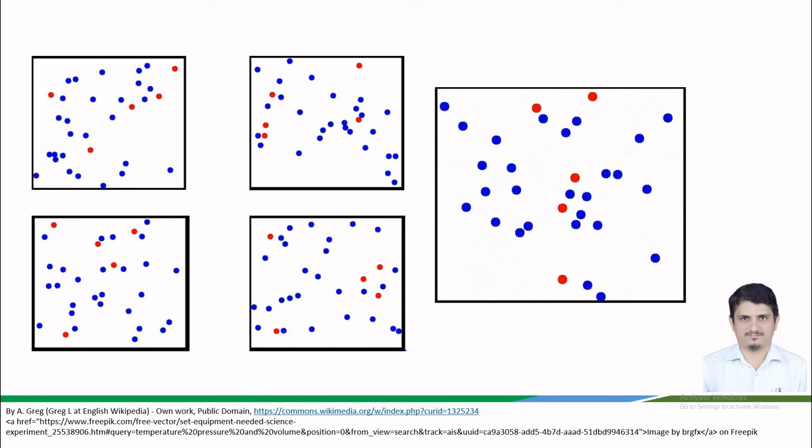The distinction between microstates and macrostates is crucial in understanding the behavior of large systems. While it is impractical to track every microstate due to their enormous number, we can still gain valuable insights by analyzing the statistical properties of microstates.